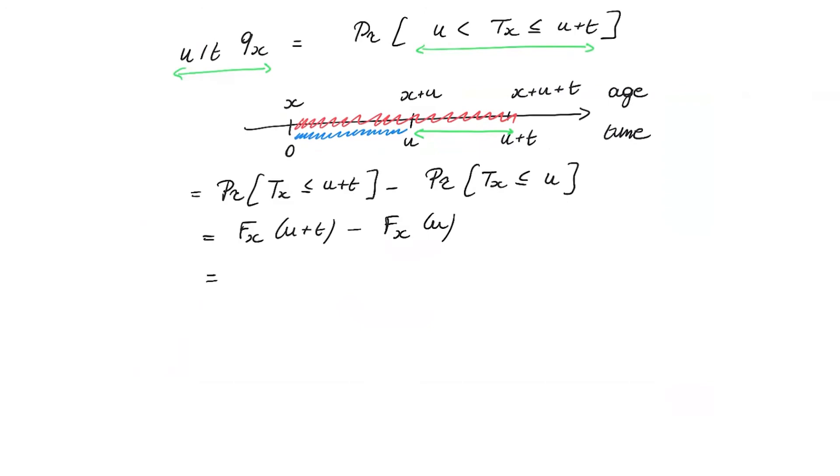CDF and my survival function. I can also say, well, this CDF that is one minus the survival function evaluated in u plus t minus one minus the survival function of the x year old evaluated in u. So further simplifying this expression, I retrieve the expression that you also see on the sheets for this particular deferred mortality probability.